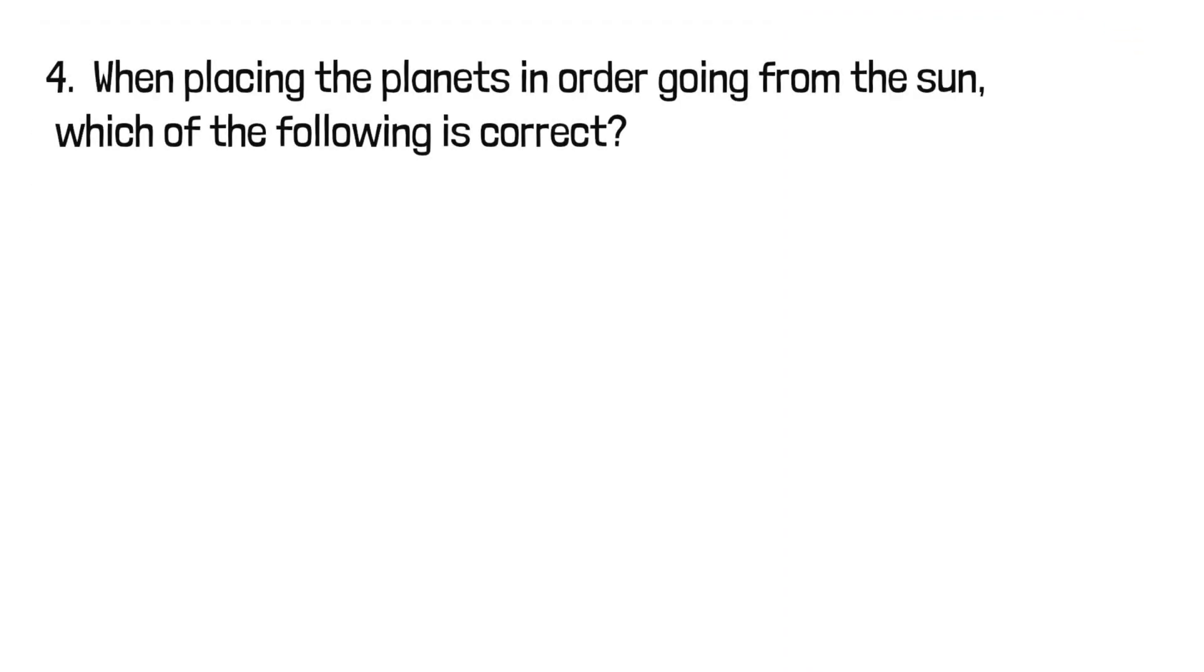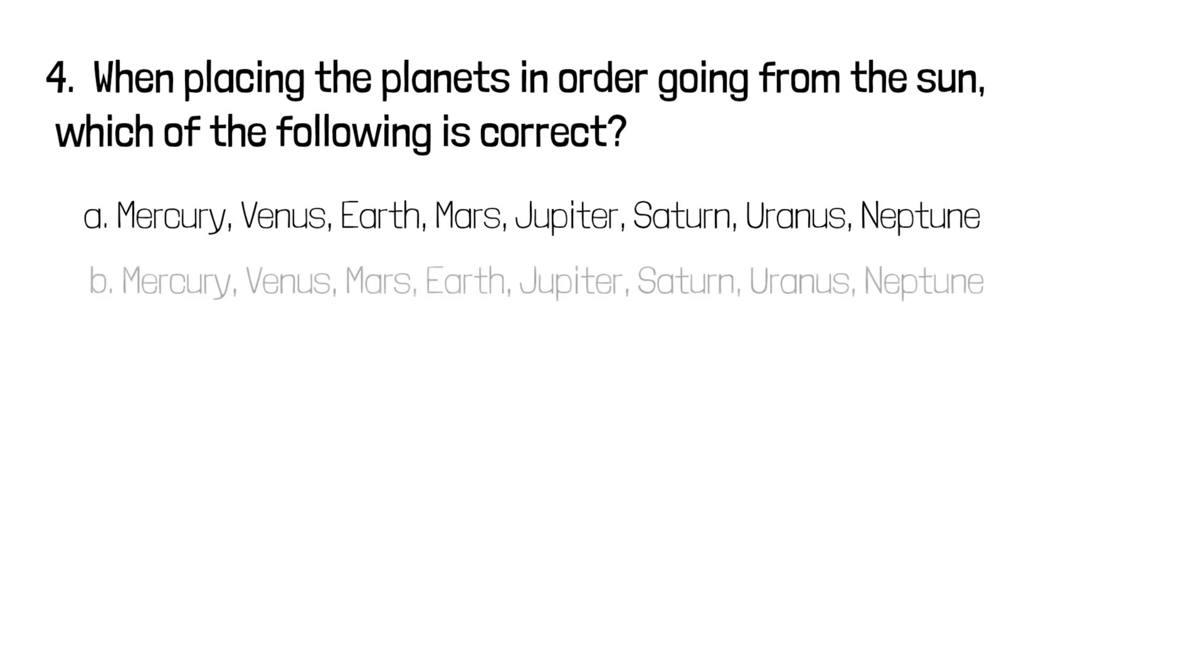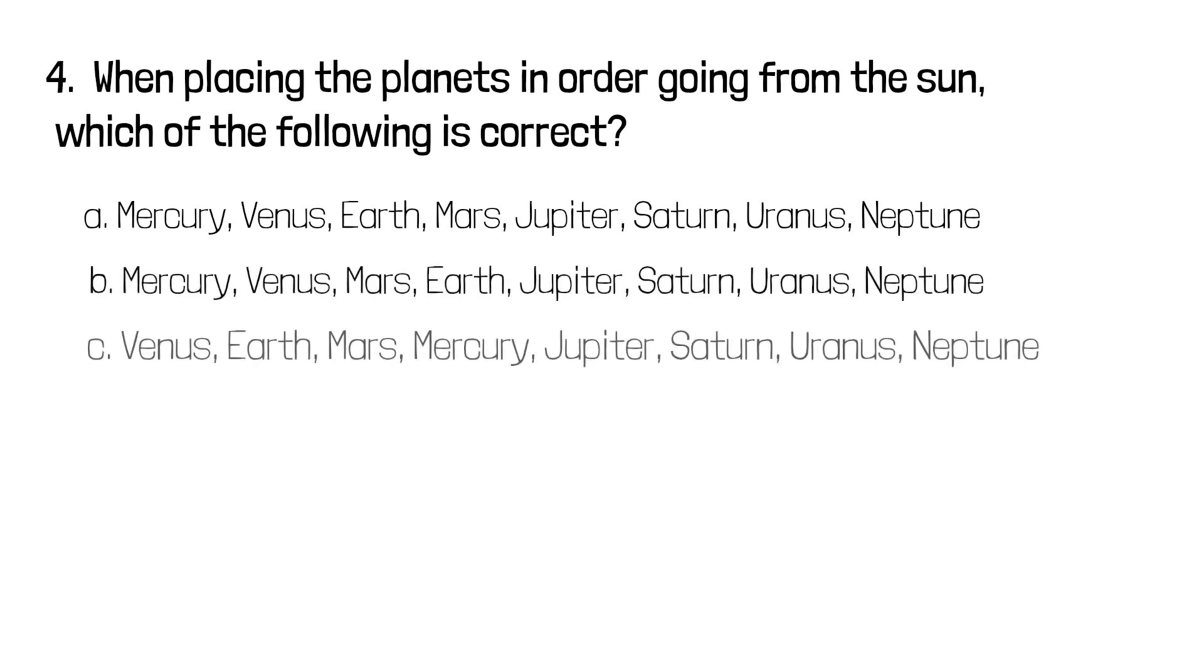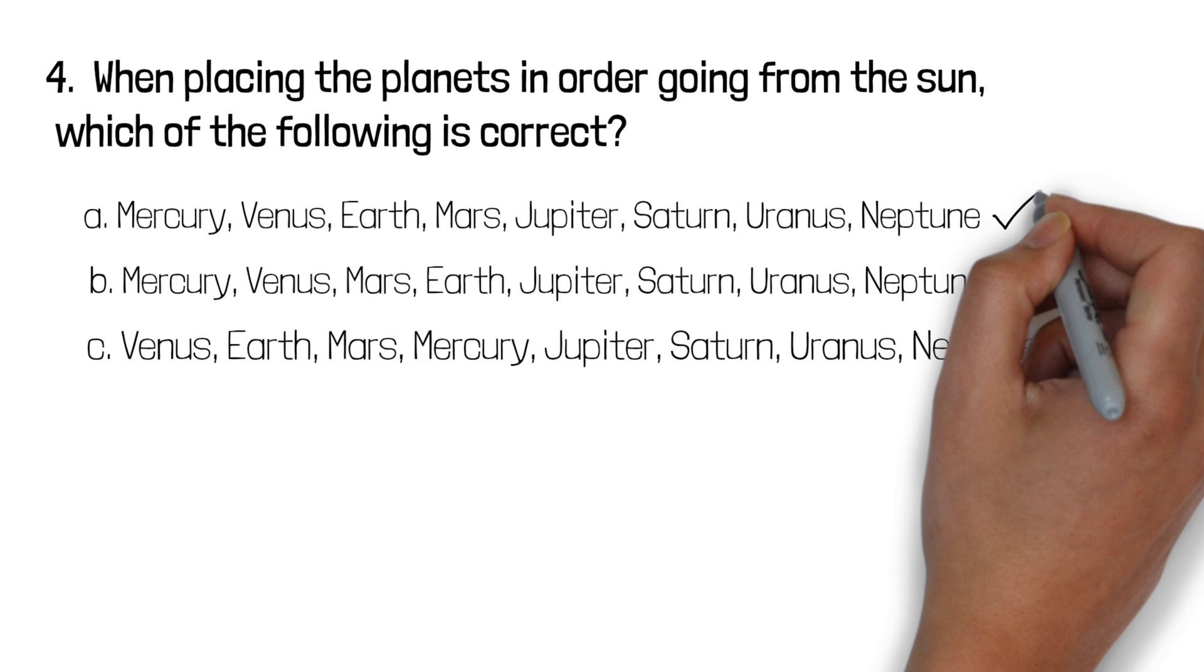Question 4: When placing the planets in order going from the Sun which of the following is correct? A, B, or C? The correct answer is A.